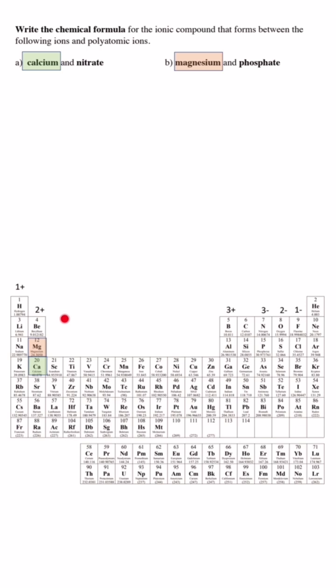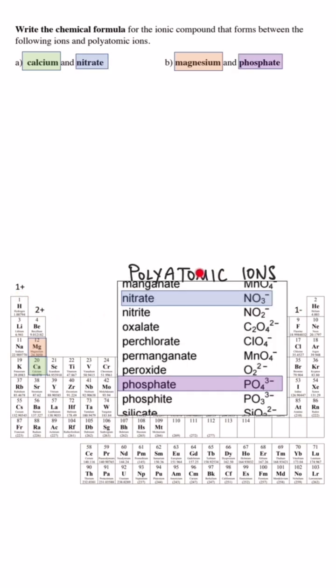The charges of some ions are predictable based on an element's column number on the periodic table. Other ions, called polyatomic ions, are made up of groups of atoms that have an overall charge.